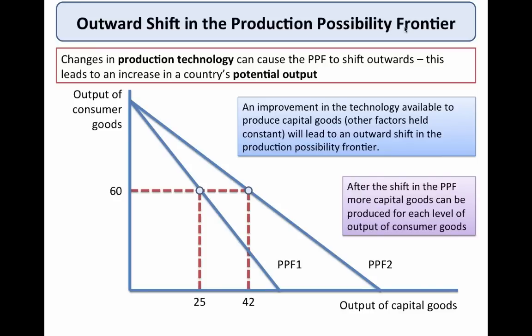Sometimes PPFs can be drawn as straight lines. In that case we're assuming that the marginal opportunity cost is constant as we move, for example, from consumer goods to capital goods. The gradient of the PPF tells you something about the opportunity cost.